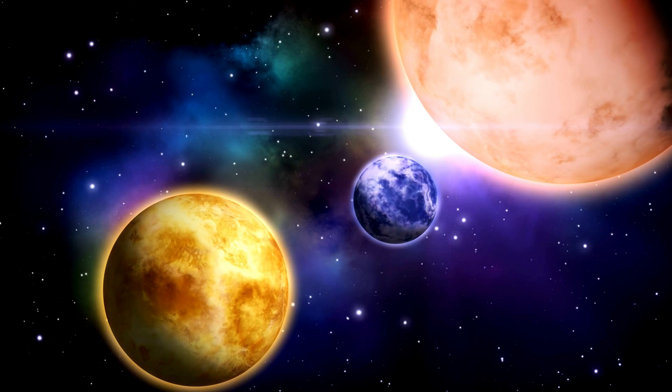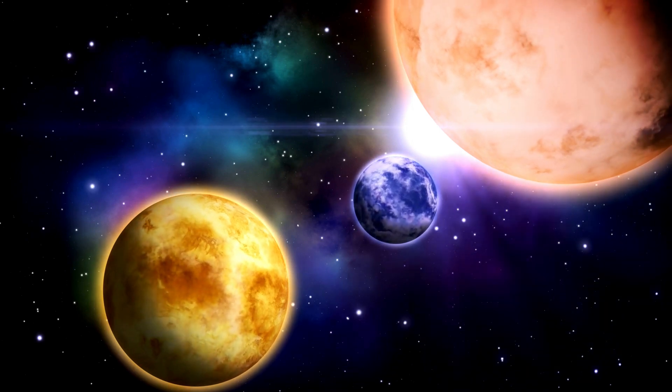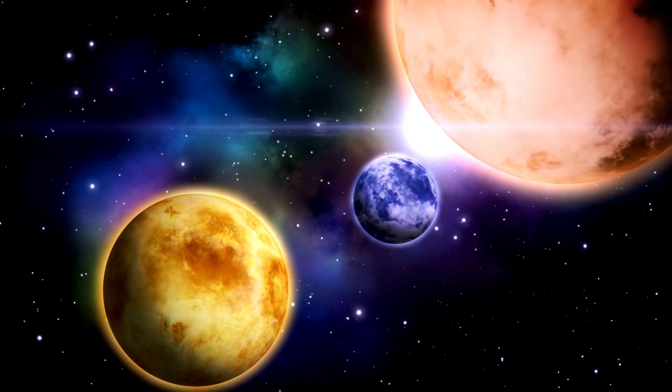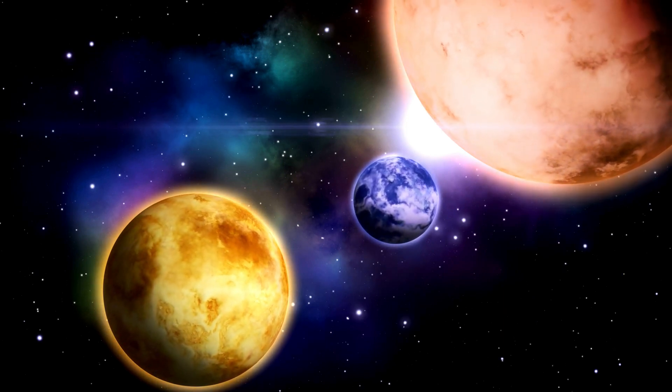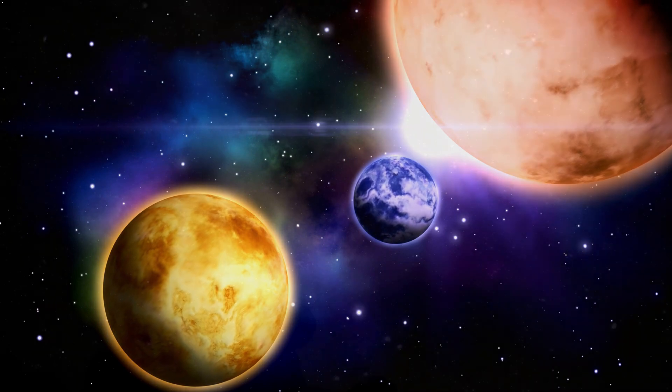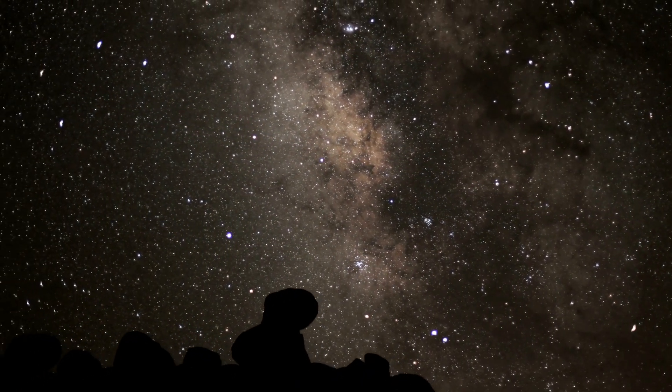By the way, all planets have a spherical shape precisely because of this process. Gravity pulls everything towards the center, distributing the entire surface of the sphere equally. Now you know how the stars appear.